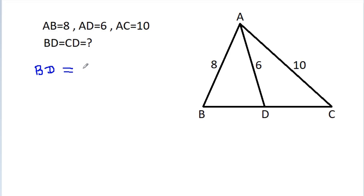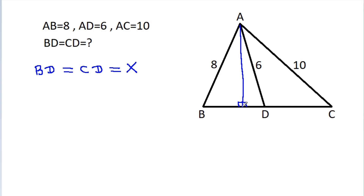BD is equal to CD — suppose it is X. And if we draw a perpendicular from A on BC, suppose this point is M, and suppose MD is equal to A.